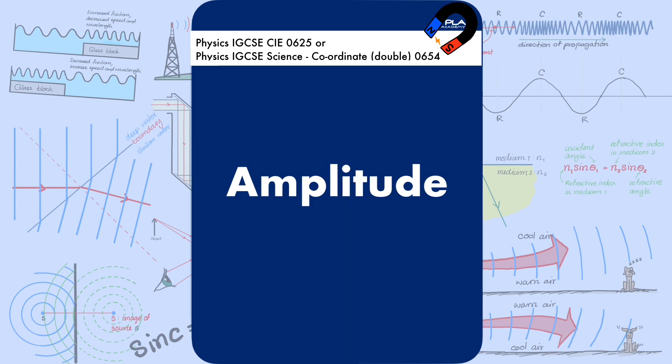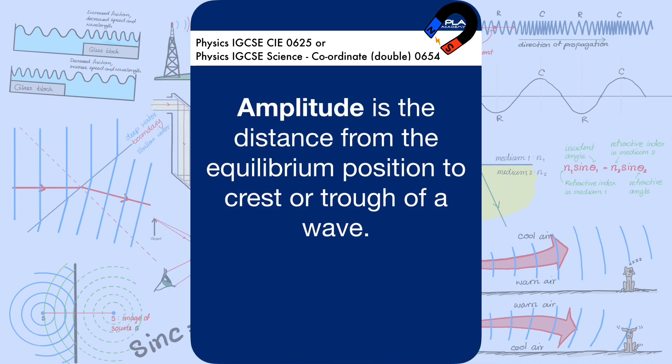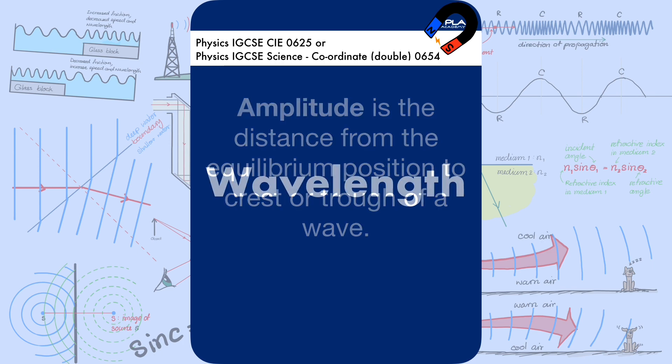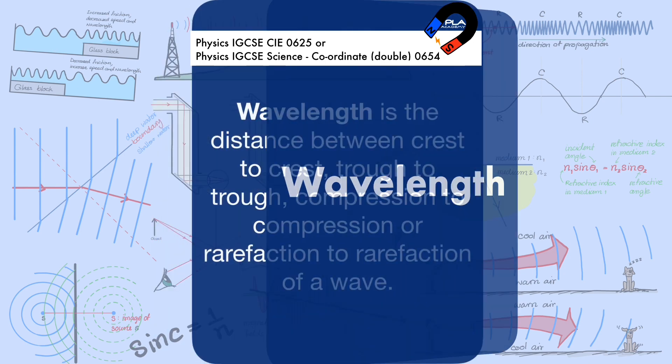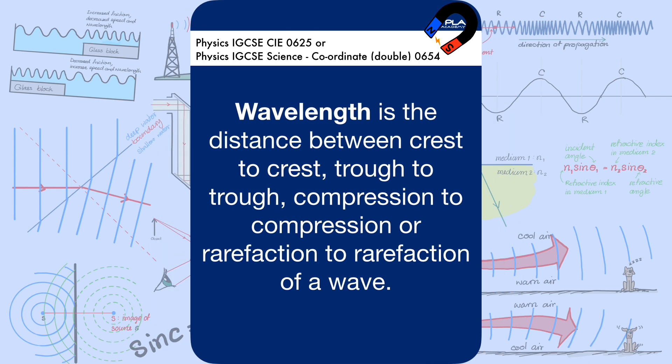Amplitude is the distance from the equilibrium position to the crest or trough of a wave. Wavelength is the distance between crest to crest, trough to trough, compression to compression, or rarefaction to rarefaction of a wave.